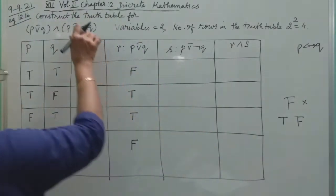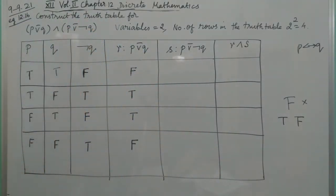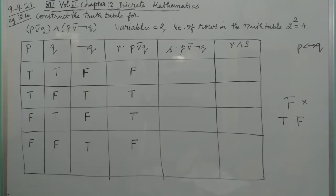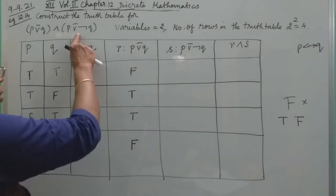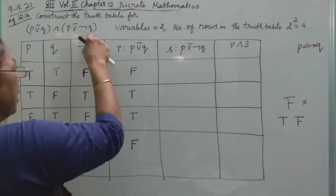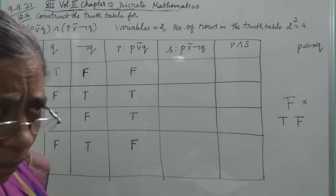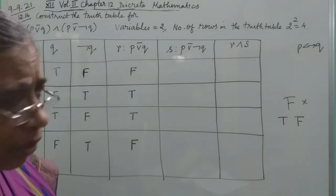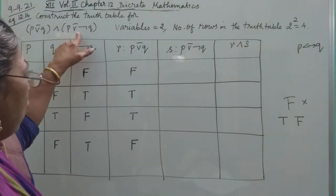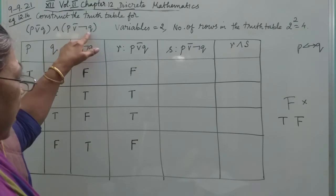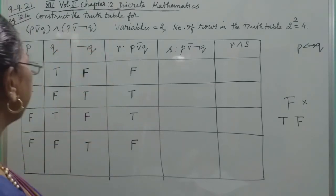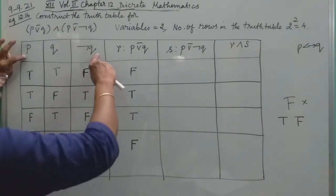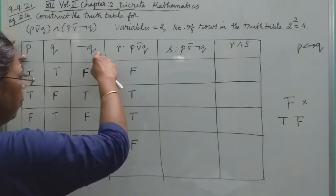Now we will do the second bracket: P EOR negation Q. So here we have P and here we have negation Q. We apply the exclusive-OR rule to P and ¬Q.